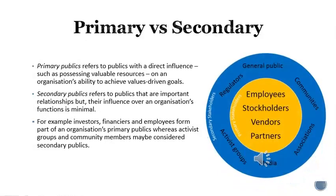Another group of publics we can talk about is primary and secondary publics. Primary publics refers to a group that has direct influence on an organization's ability to achieve its goals. Secondary publics, on the other hand, are a group that have important relationships with an organization but whose influence over the organization's ability to achieve its goals is minimal. For example, investors, financiers, and employees form part of an organization's primary publics, whereas activist groups, community members, and regulators form part of an organization's secondary publics.